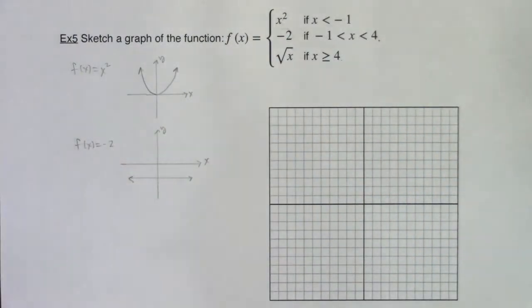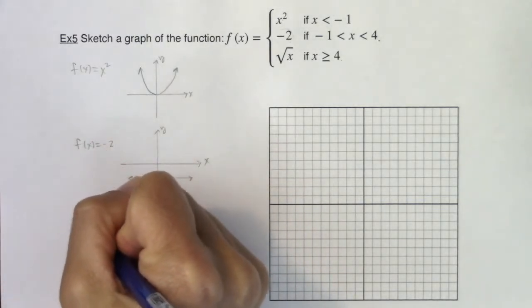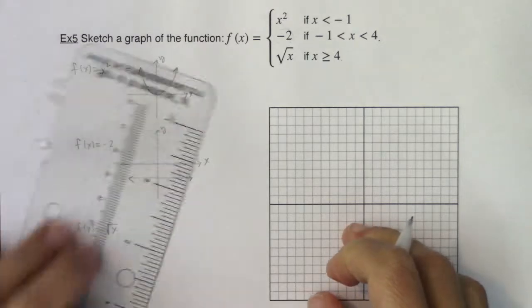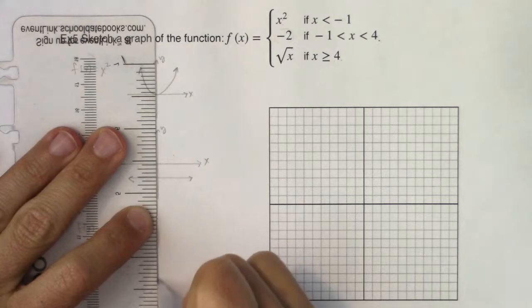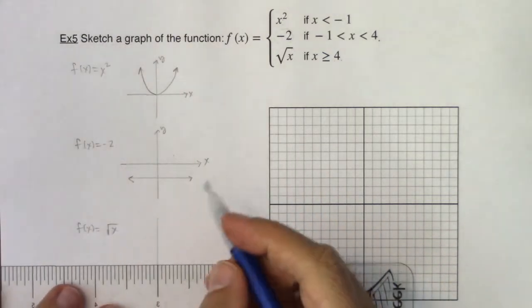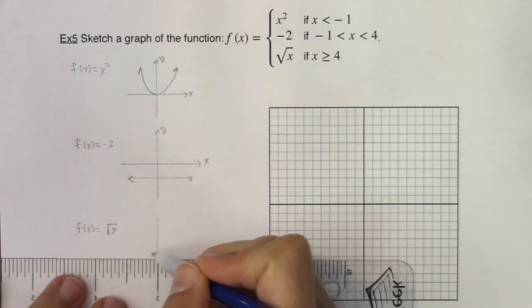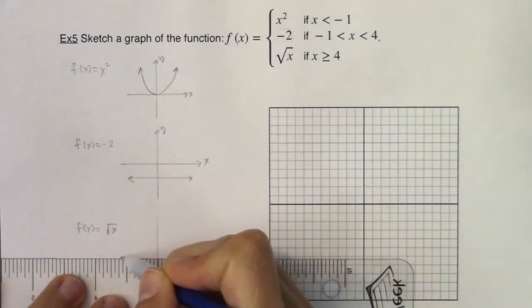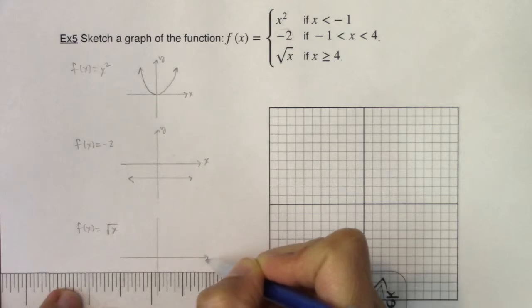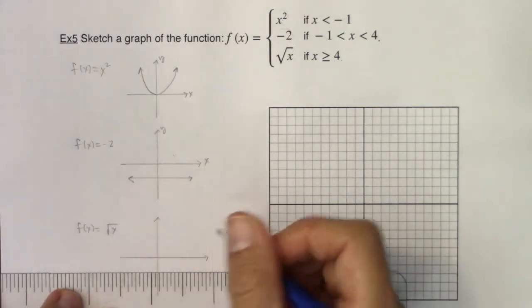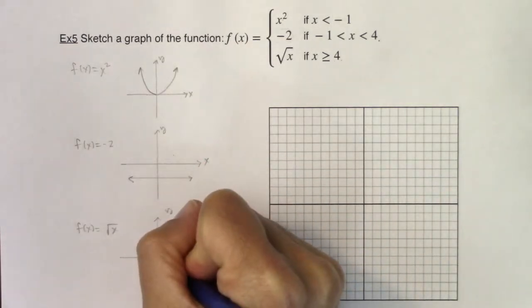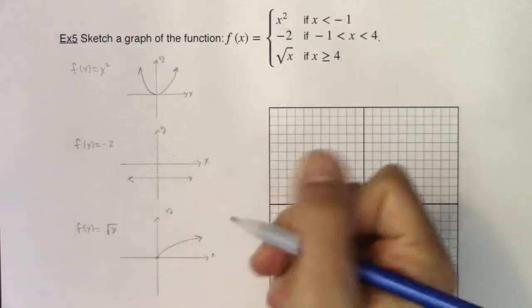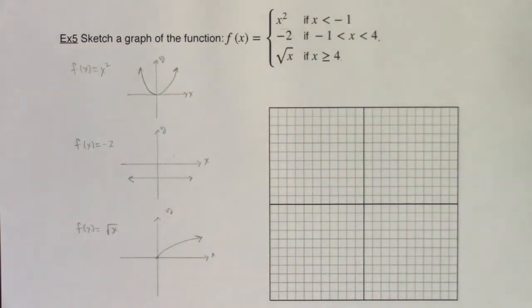And last but not least we have the square root function. Now this has a radical in it so we do have a little bit of a domain issue. I need my radicand to be positive and that means the stuff under the radical has to be positive because my index is 2 which is an even number. So I'm going to start when x is 0 and it's going to look something like this. These are your basic toolkit functions. So I've got my parabola, my constant, and my root.